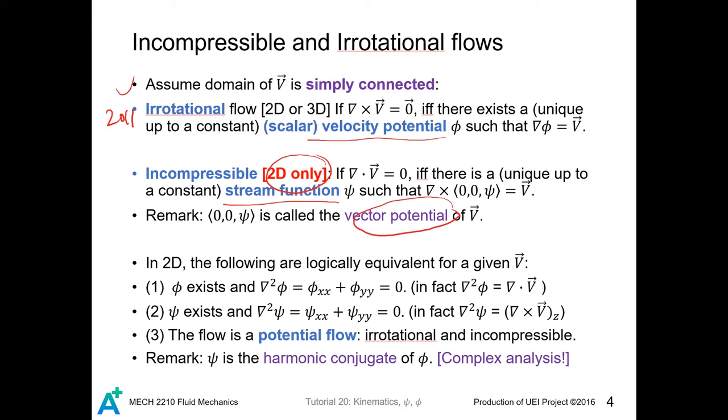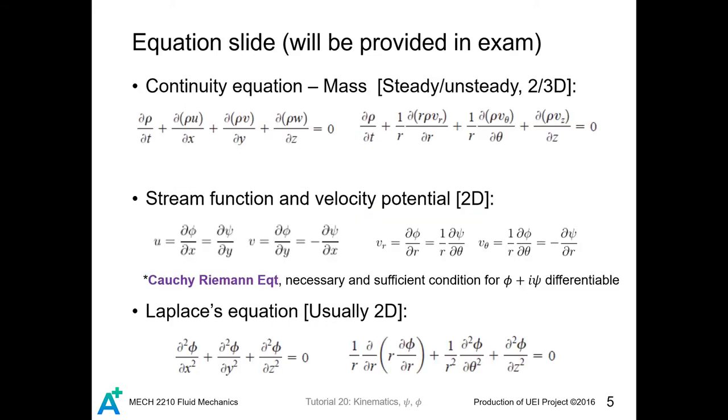We will look at how these two functions describe these properties later in this video as well as in the next video. In a two-dimensional flow, if either psi and phi solve the Laplace equation, then both of the functions exist. We call such flow as potential flows, and we are talking about it in the next video. If you are interested, actually psi is the harmonic conjugate of phi, and such pair of nice functions are studied extensively in complex analysis in mathematics.